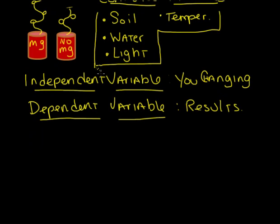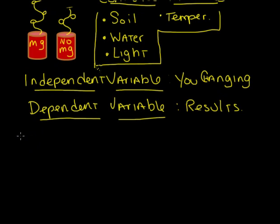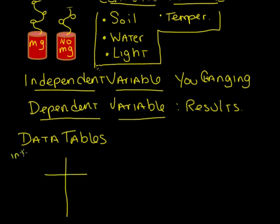You want to put your data into an organized fashion. So we use something called data tables. The most basic you can come up with is the classic T table. On this side I put my independent variable. On this side I put my dependent variable. The change that I made was the nutrients. One of them received miracle grow. And the other side received no miracle grow.